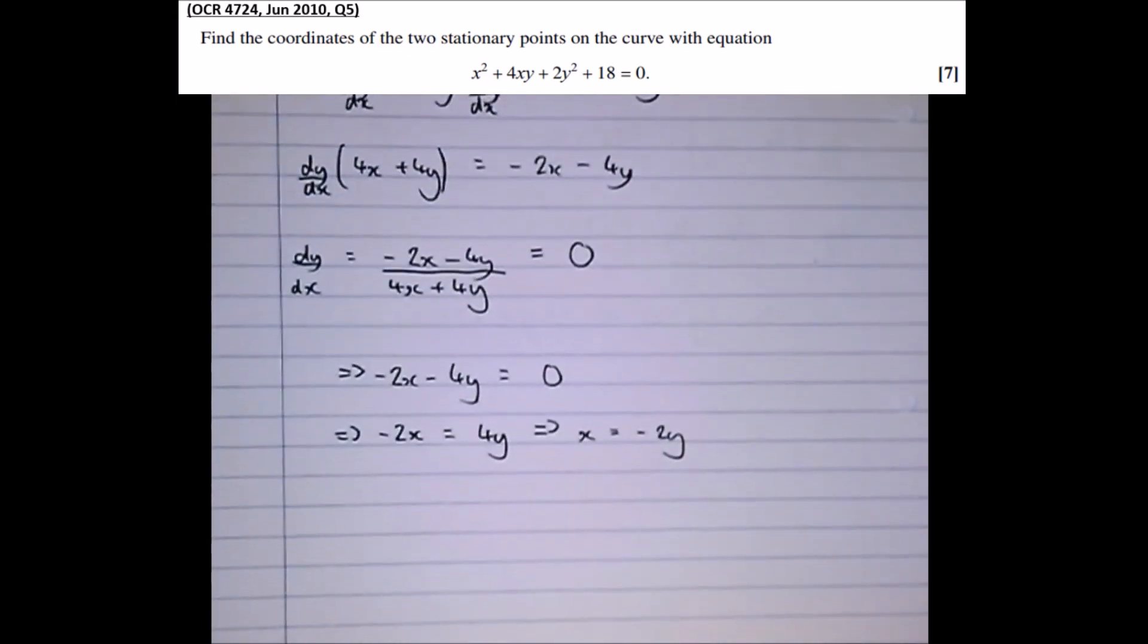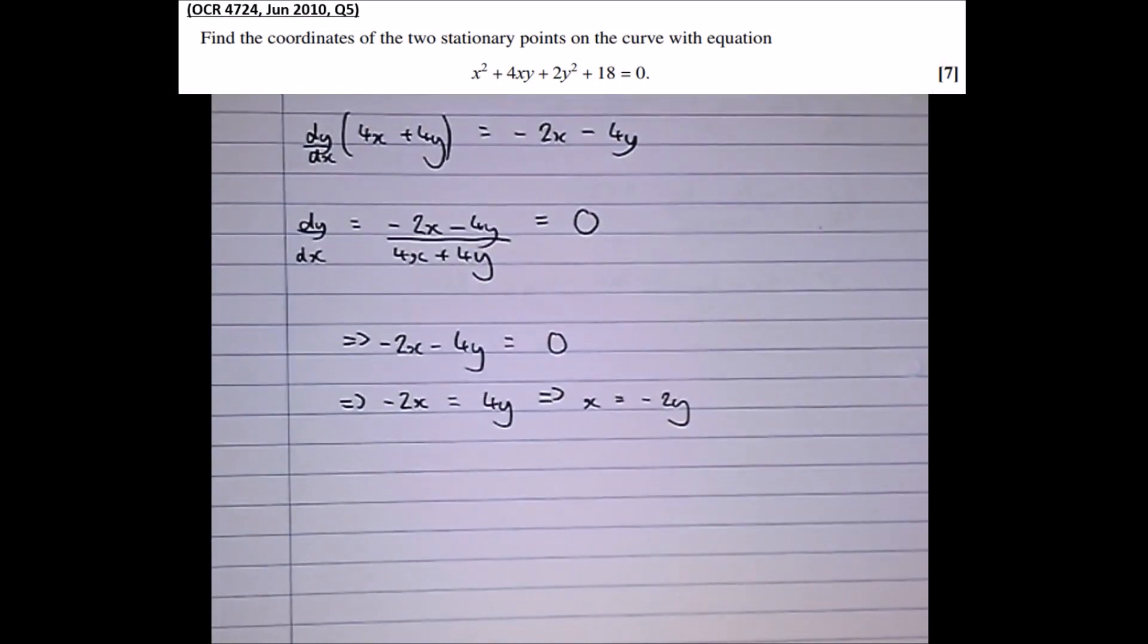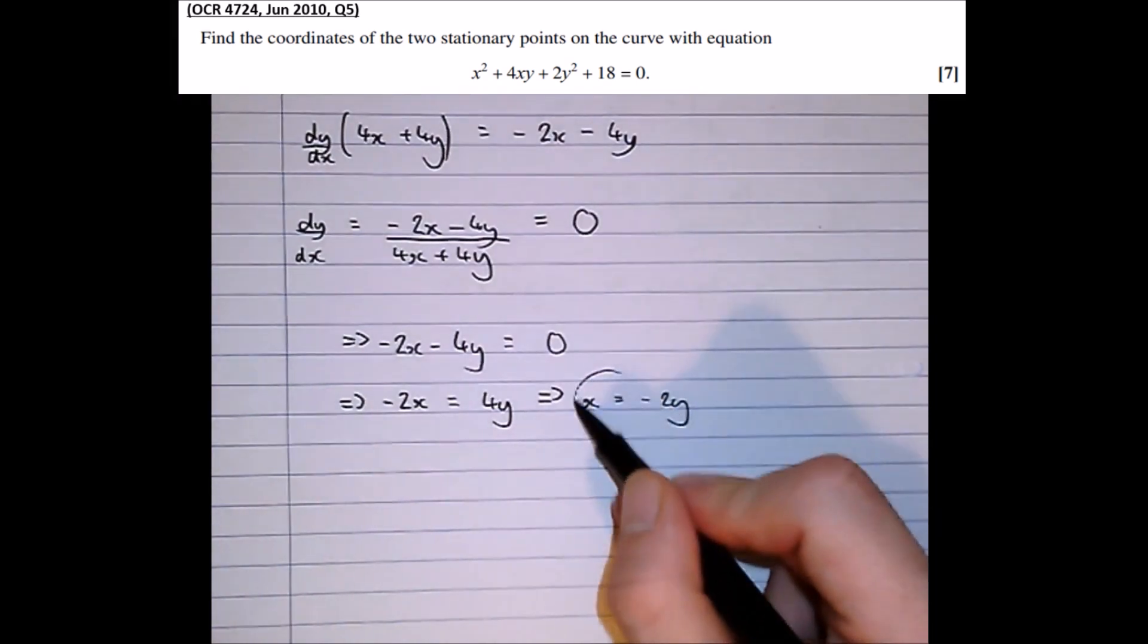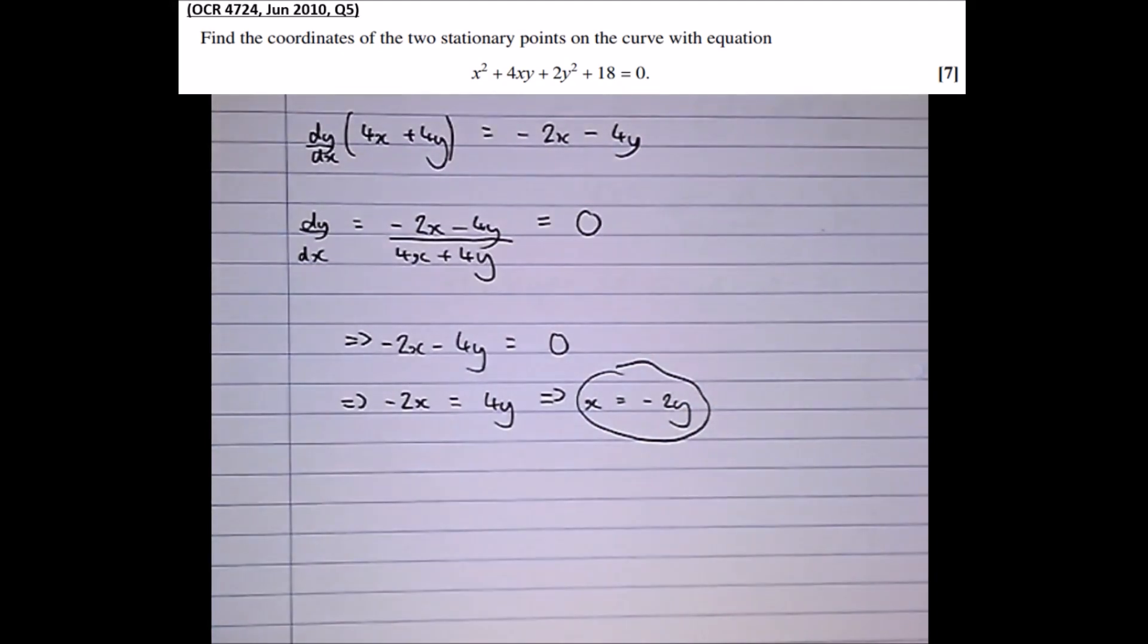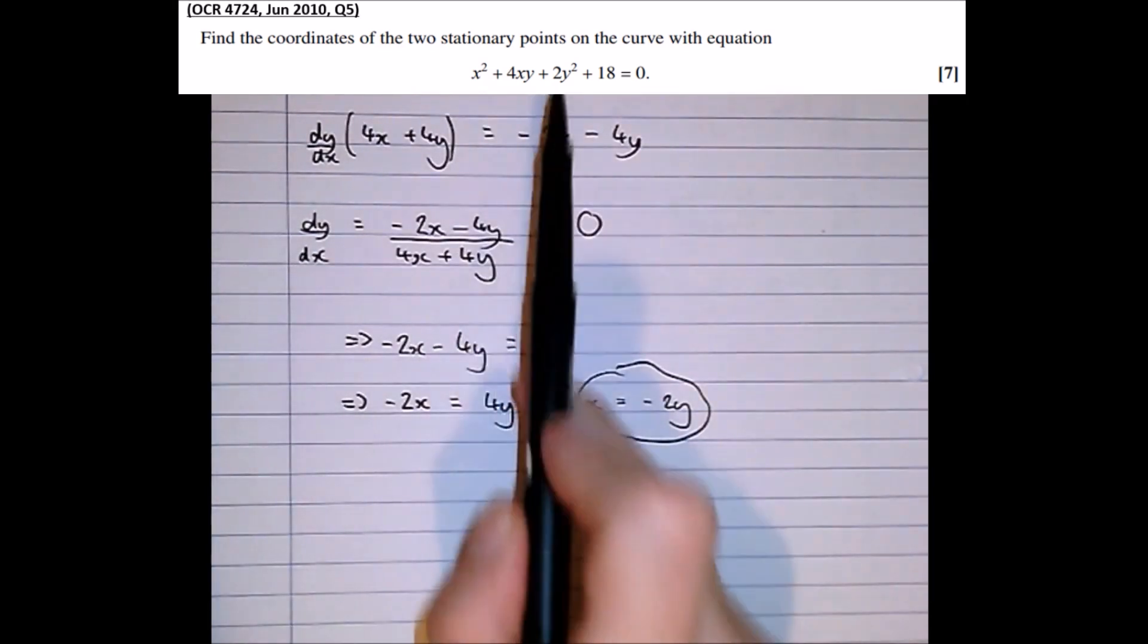Now at this point in the stationary points question, we'd expect to get not x equals a function of something, we'd expect just to get the answer, a coordinate. However, it's not usually the case with implicit differentiation questions. This is telling us that the stationary points lie on the line x equals minus 2y. We also know that the stationary points have to lie on the curve itself, because it's the curve's stationary points we're talking about. So if we know that they lie on this line here, and the curve here, if we solve them simultaneously, we should get the stationary points.